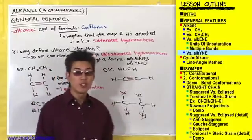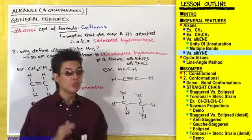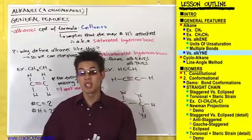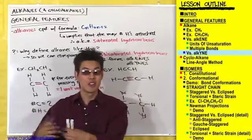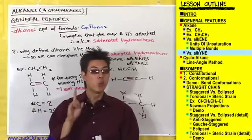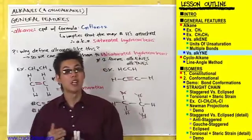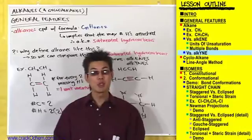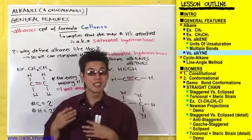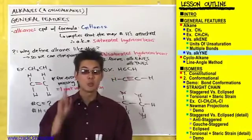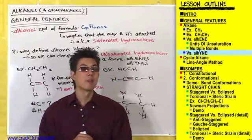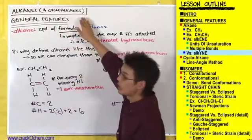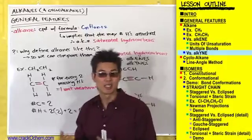One more thing to note: you've just seen multiple bonds cause a compound to have units of unsaturation — to be lacking hydrogens. However, there is one other way for a compound to have unsaturation, and that is by forming rings. Anytime you see a ring, you should automatically think that's 1 unit of unsaturation. An example of a compound in a ring is a cycloalkane, bringing us into our next topic.